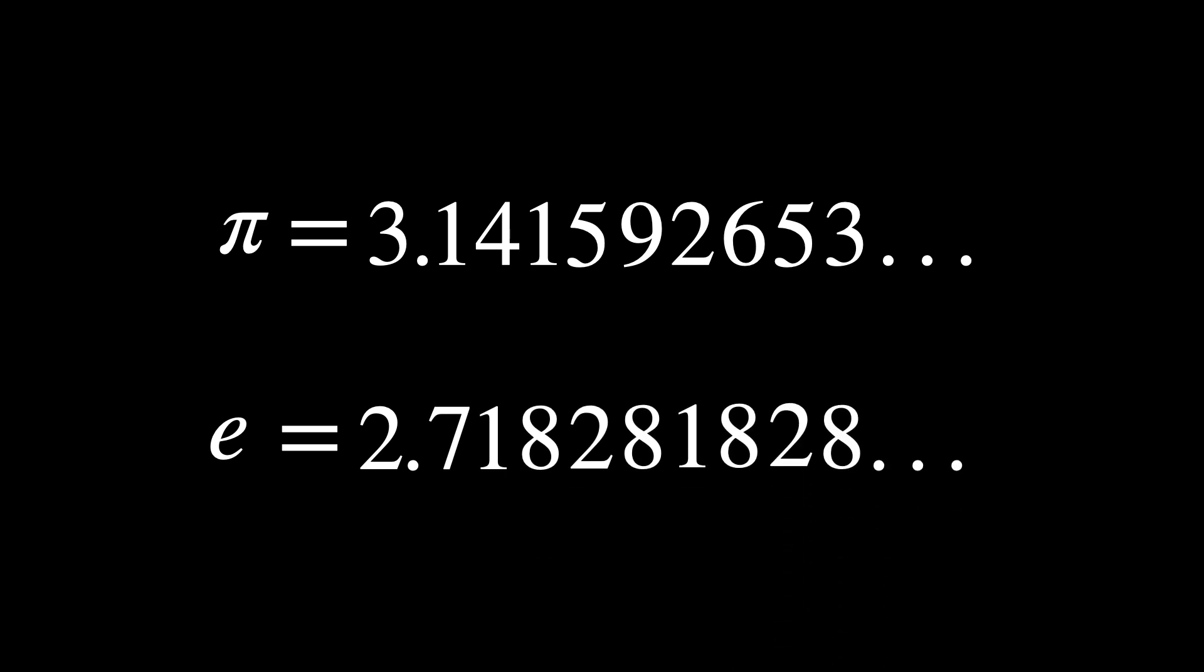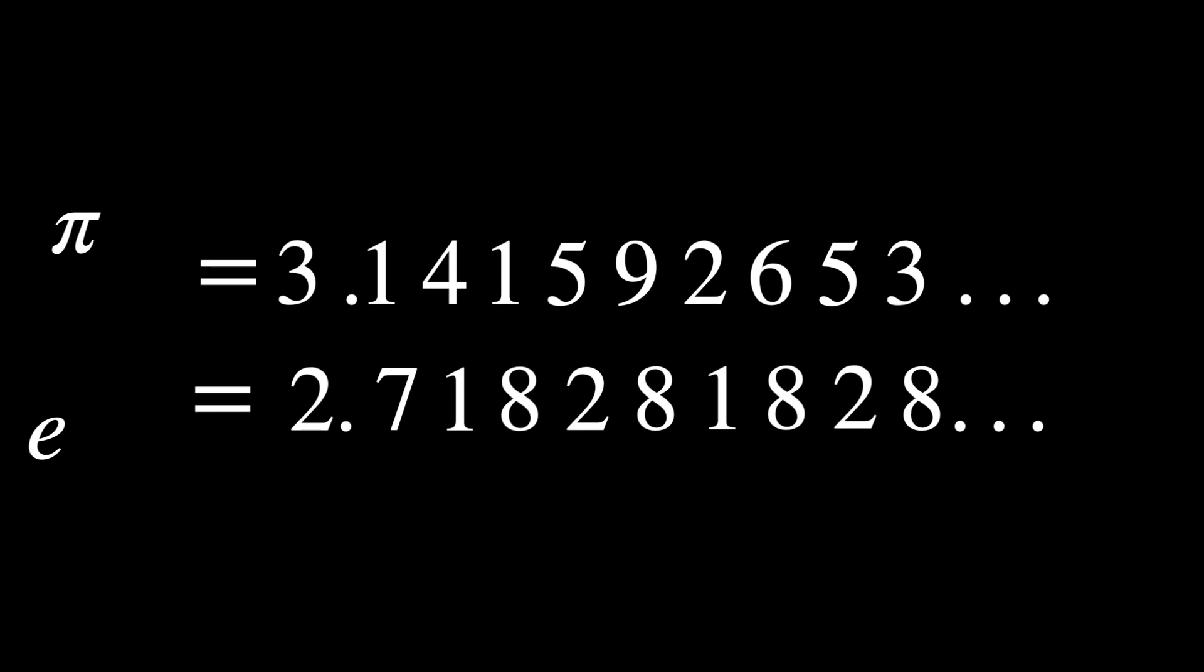But this definition is a little tricky to make rigorous, because you could technically define a point on the sphere using just one number. For example, take pi and Euler's number. You can take these two and interleave the digits to form a new number from which the two original numbers can be recovered.